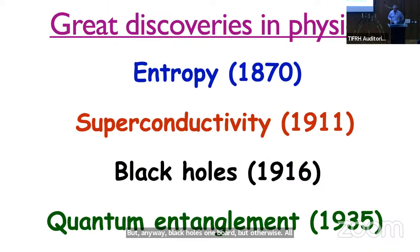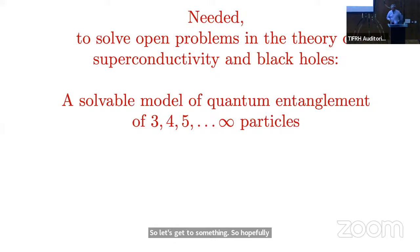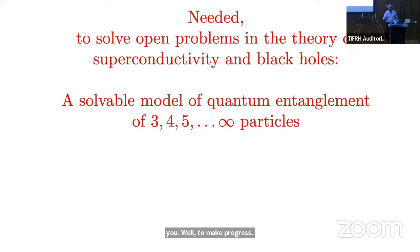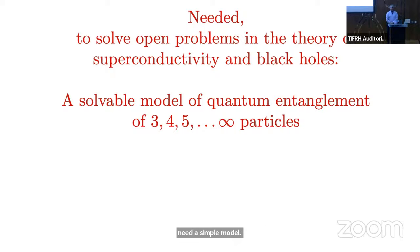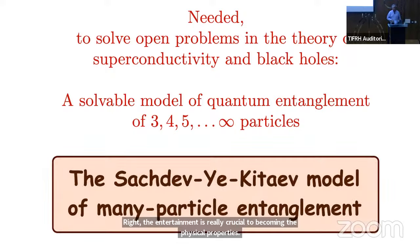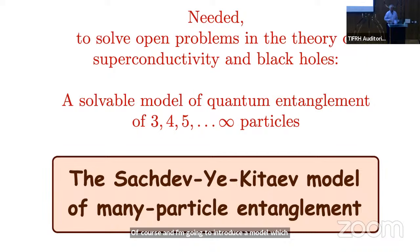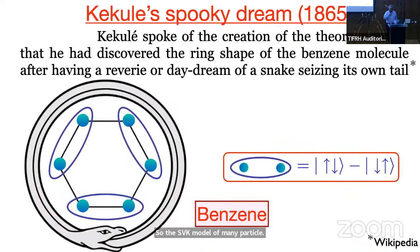So let's get to something more current. To make progress we need to understand quantum entanglement not just of two particles the way EPR proposed, but of really an infinite number of particles. Nothing in physics is more useful than having a simple model — a simple model of something that has lots and lots of entanglement where the entanglement is really crucial to determine the physical properties. I am going to introduce a model which happens to be named after me.